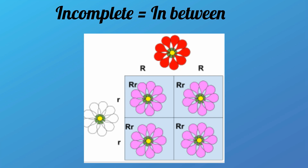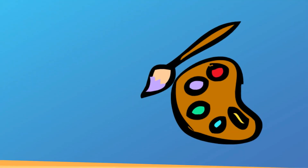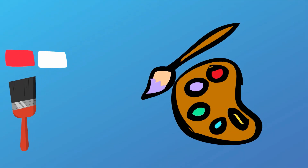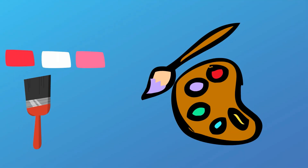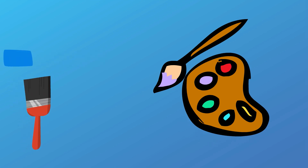With incomplete dominance, when you cross two individuals with two different phenotypes you get a third phenotype that is a blending — you end up with something that is in between. Think of mixing paints: if you mix red and white you get an in-between color which is pink. Blue and yellow makes green, again in between.